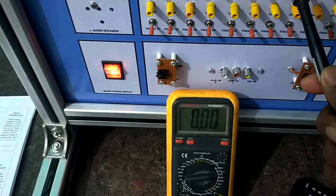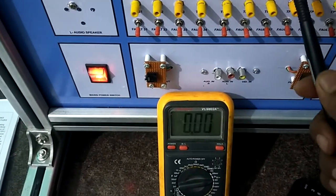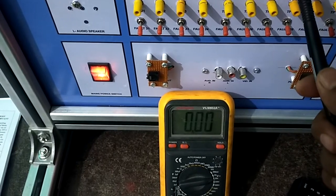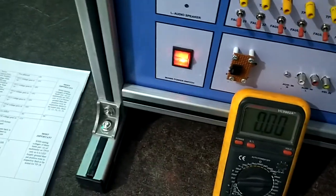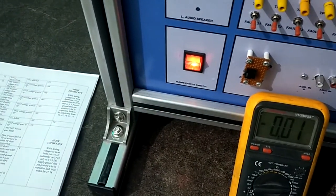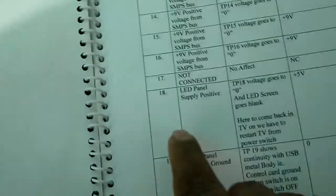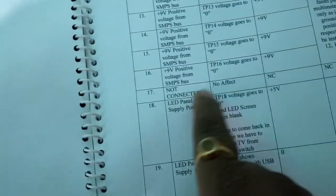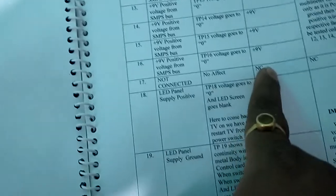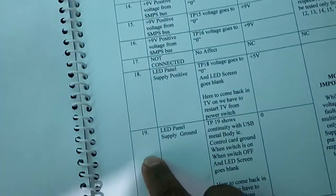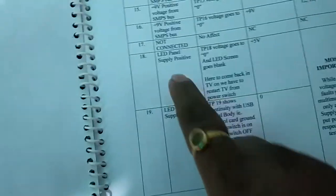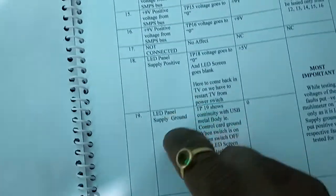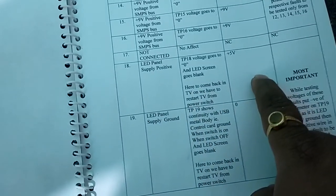Now this is 17 and 18. 17 is not connected to any fault. 18 and 19, you can see 18 and 19. See here, 17 is not connected, no effect, not connected. 18 and 19, this is LED panel supply. This is the power supply to LED panel. So it is around 5 volt.